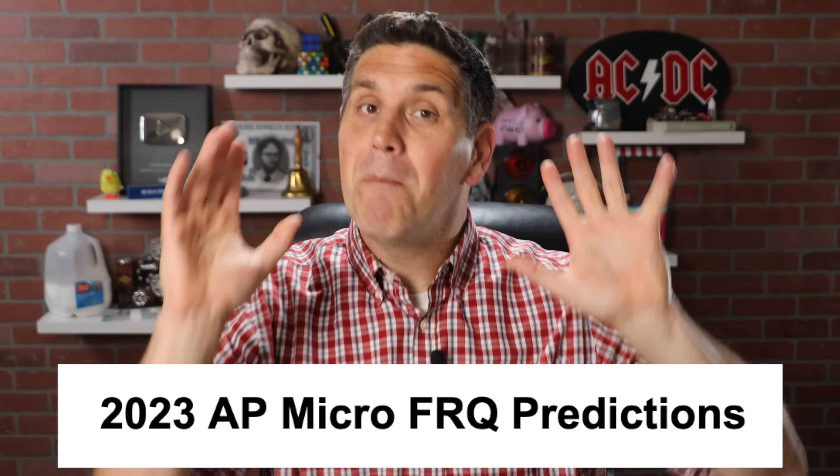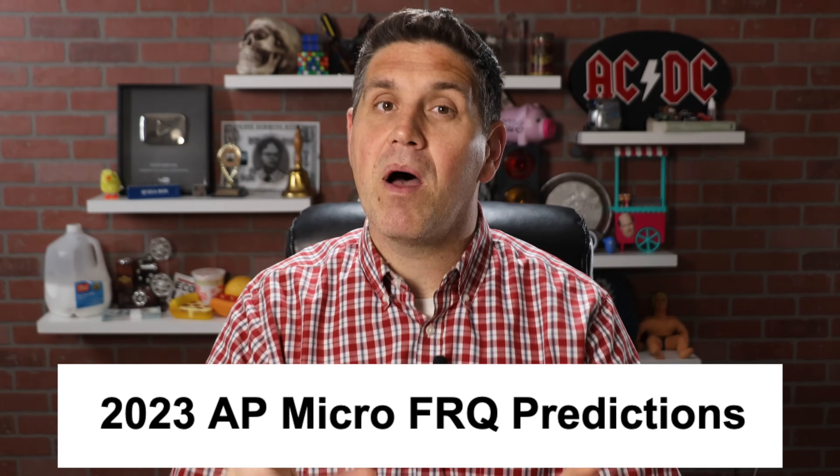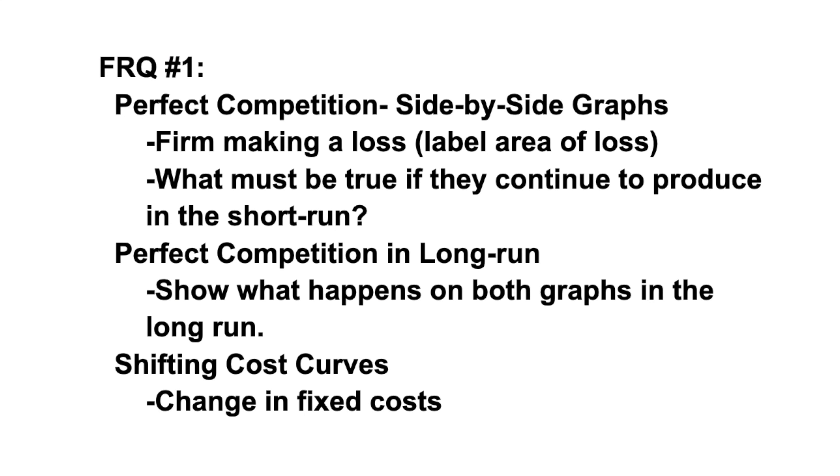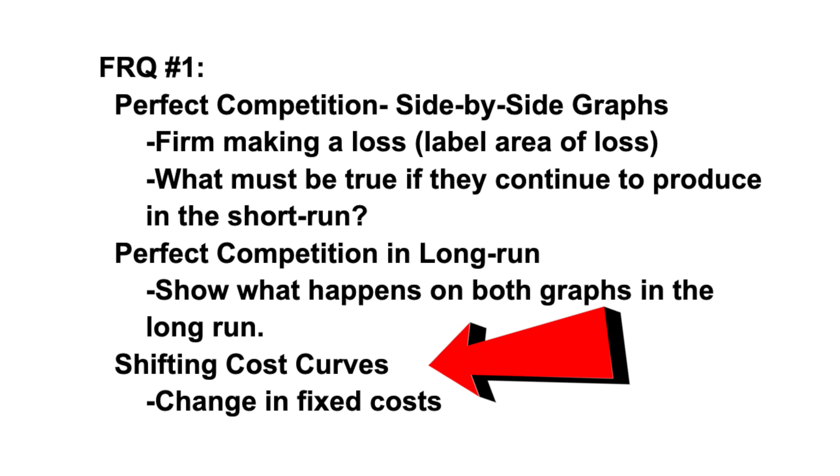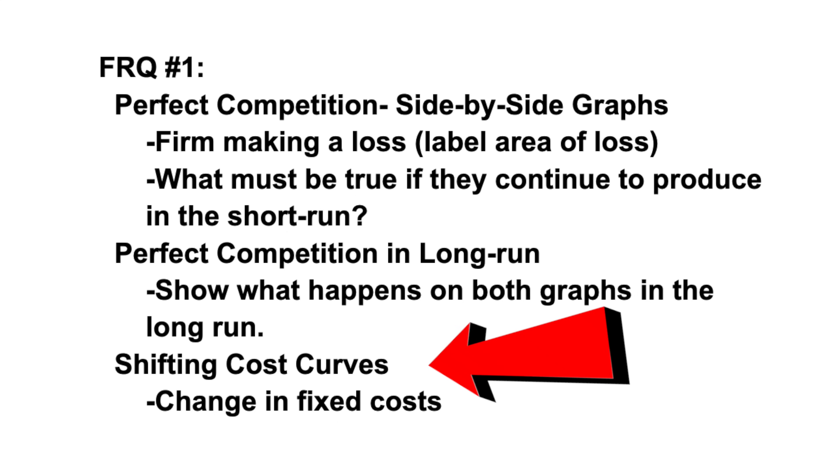That's macroeconomics. For microeconomics, I think the first response is going to be perfect competition side-by-side graphs. Make sure you can draw the market and a firm with the firm having a loss, and make sure you can both draw and explain what's going to happen in the long run. I also think they're going to ask about the shutdown rule and maybe something about how cost curves shift. Remember, a change in fixed costs does not change marginal cost and therefore does not change output — so a lump sum tax or subsidy doesn't affect the quantity a firm produces because it only affects fixed costs.